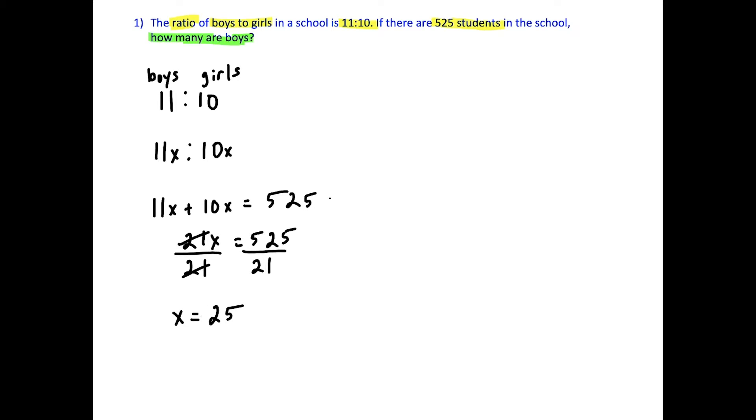So x equals 25. So then how many boys are in the school? Well, the number of boys is 11 times 25. And this is going to work out to 275. So there are 275 boys.